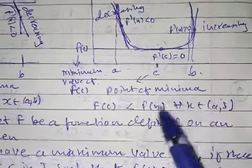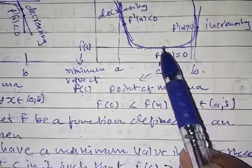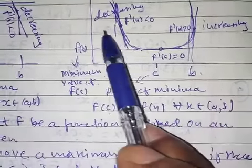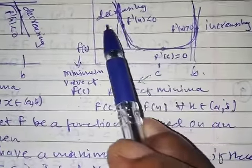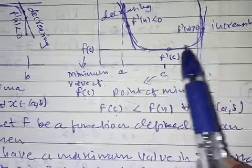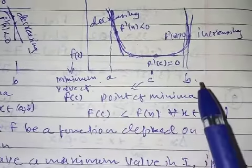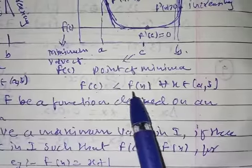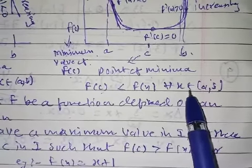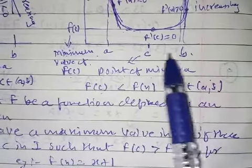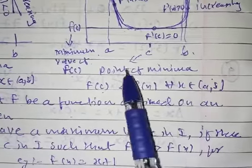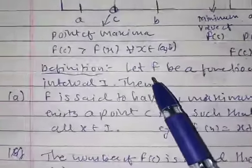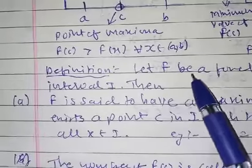This point c is called the point of minima, and f(c) is less than the points on either side of this curve. So f(c) is less than f(x) for every x belonging to the open interval (a, b). This is called the point of minima.